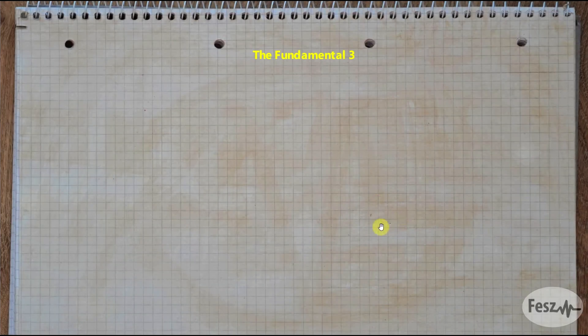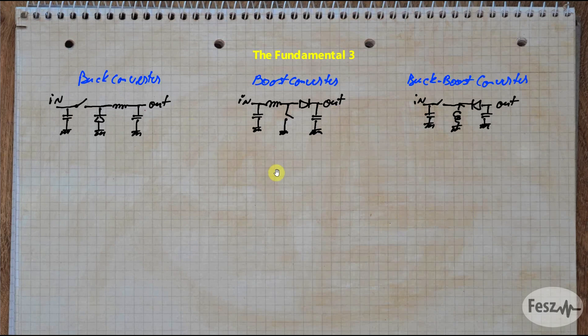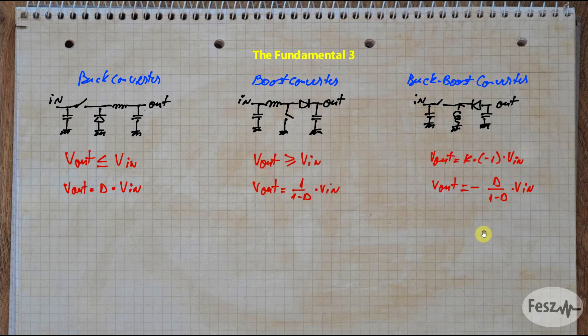Now before looking at the tapped inductor topologies, it's important to first understand what specific limitation found in the base topologies they are supposed to fix. With these, the output voltage is either smaller, larger, or inverted compared to the input, based on the exact topology, but the exact value in continuous conduction mode at least is duty cycle dependent based on a very clearly defined formula.